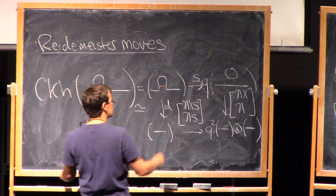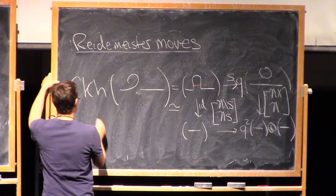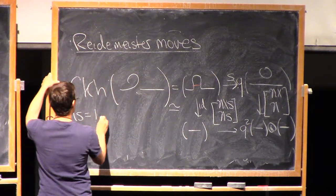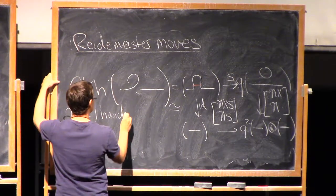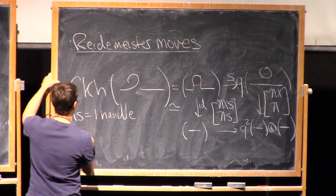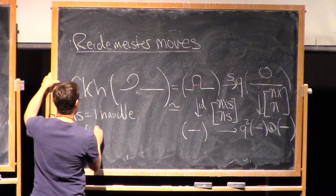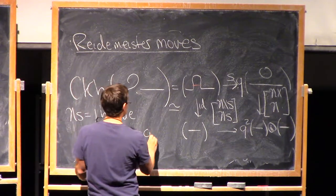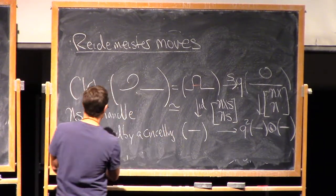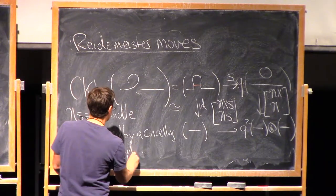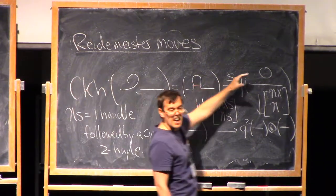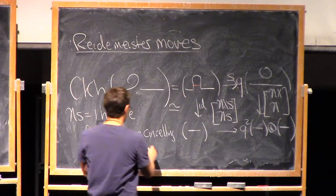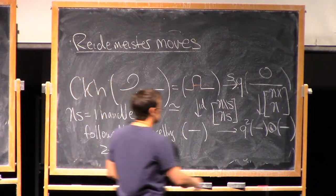But, you know, eta s, what is this? This is a one-handle addition, followed by a canceling two-handle. So I added this one-handle, and then I capped that off. That cobordism just cancels to give me the identity cobordism.